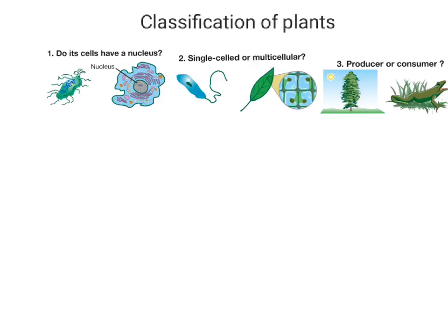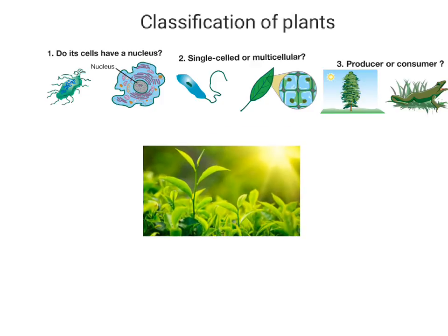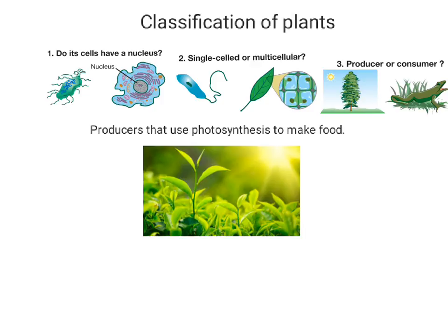So we're going to look at producers — strictly plants. Plants are producers that can produce their own food through the process known as photosynthesis. There are other producers, such as protists. What's the difference between a plant and a protist? Plants will have stems, leaves, roots, and are multicellular.